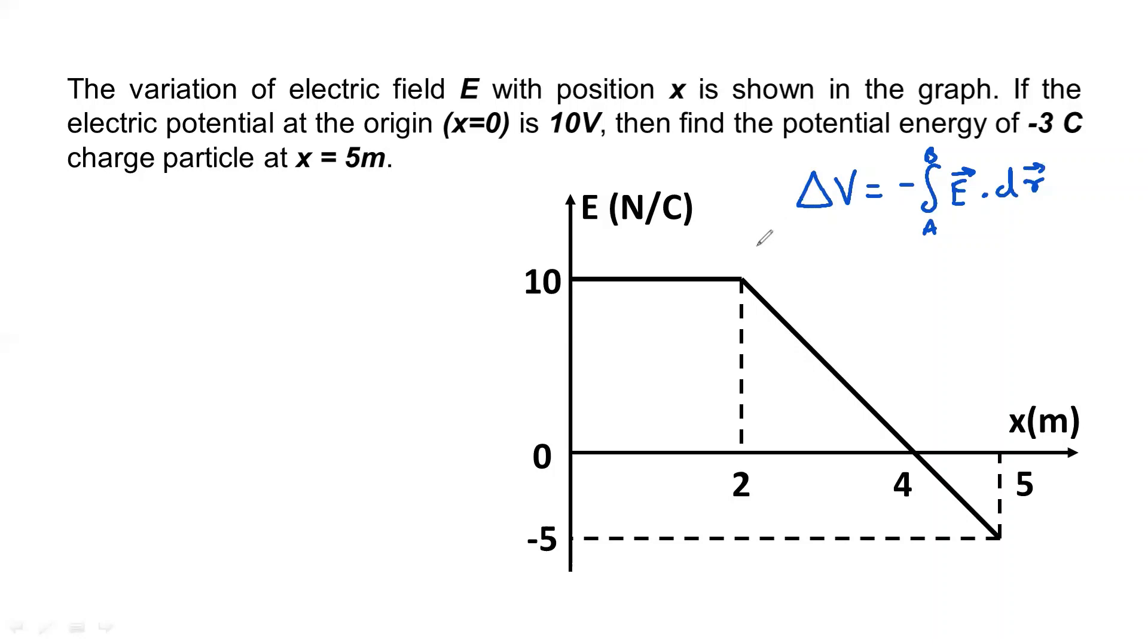In this graph, you can see that electric field from x equals 0 to x equals 2, it is linear and it is constant and its value is 10. Now x equals 2 to x equals 5, it will linearly decrease.